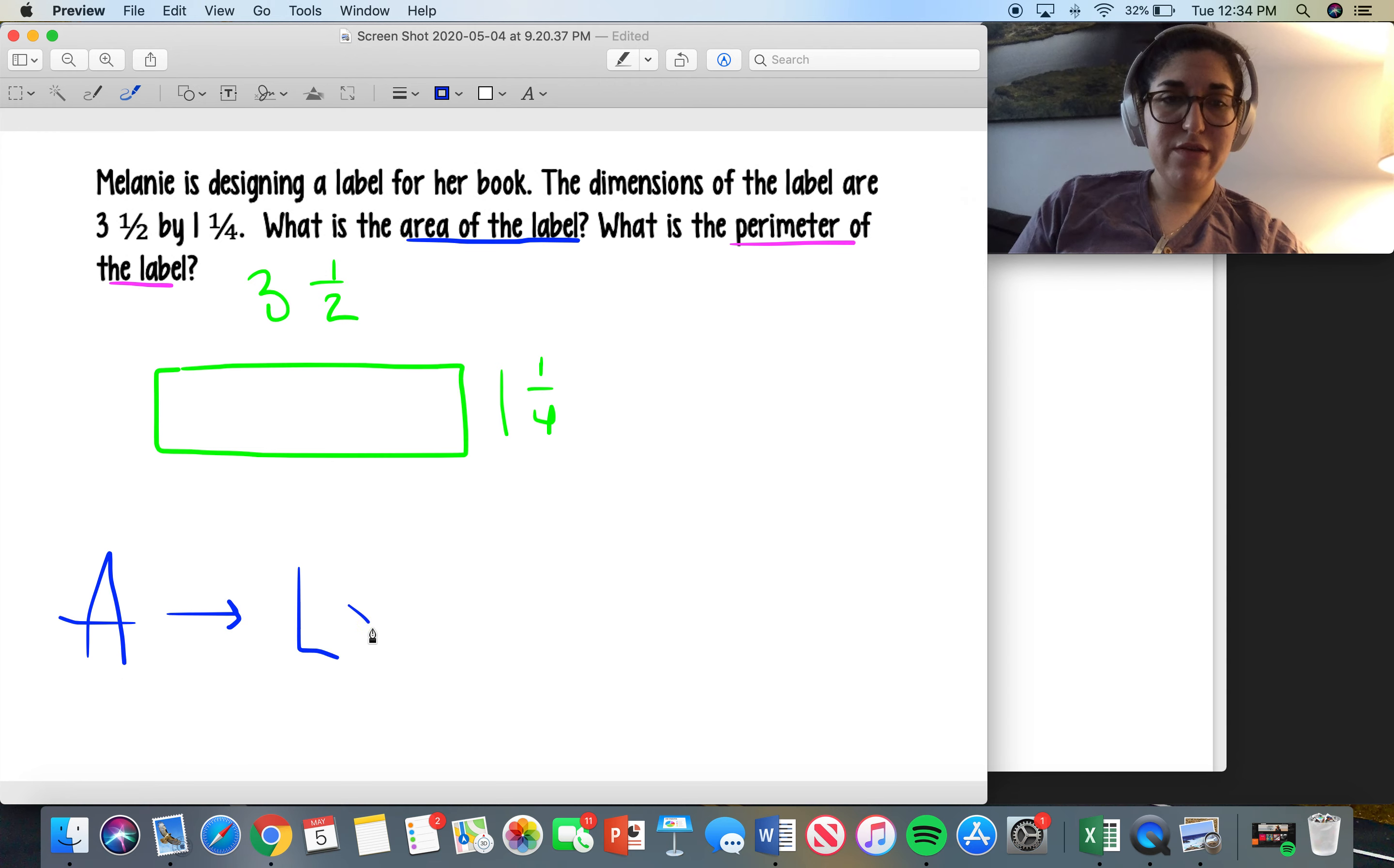So there are two things I'm looking for. I'm looking for the area of the label and I'm looking for the perimeter of the label. Now the area is what we've been working on a lot. Area is I need to do length times width.